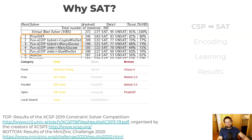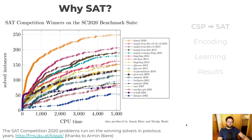So why translate a CSP into SAT? To put it simply, it works very well for many constraint satisfaction problems. The tables in this slide show recent CSP solving competition results, and the top positions are taken by solvers which make use of SAT solving either in part or entirely. SAT solvers themselves are also becoming more powerful all the time. This plot shows the performance of the winning solvers in the SAT competition over the last two decades, all run on the latest benchmarks. So by encoding CSP to SAT, we automatically gain from these performance developments.